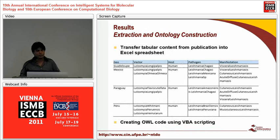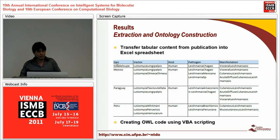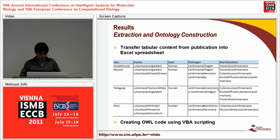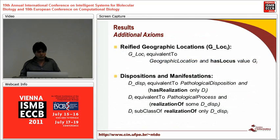In our case we are talking about leishmaniasis. We generated all these classes by means of a VBA script — it's quite simple and generates an OWL file for us. We also need some additional axioms for a better description of our pattern.